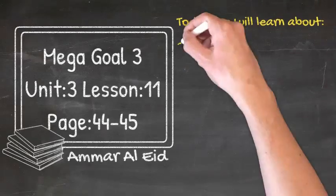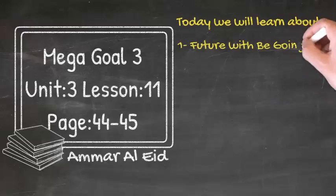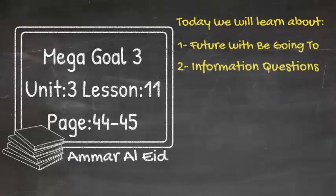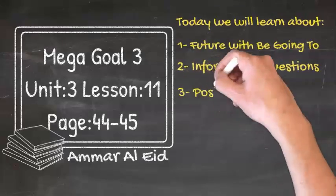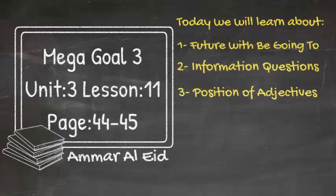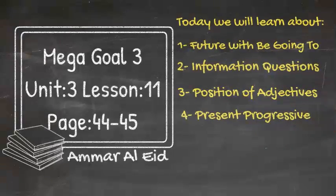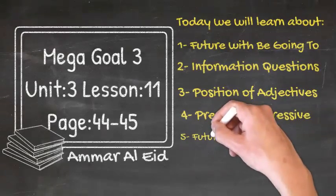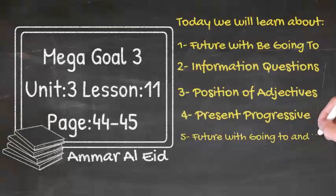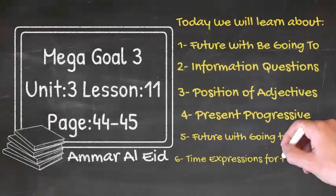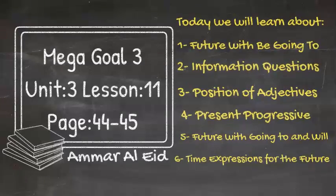Today we will learn about number 1, future with be going to. Number 2, information questions. Number 3, positions of adjectives. Number 4, present progressive. Number 5, future with going to and will. Number 6, time expressions for the future.